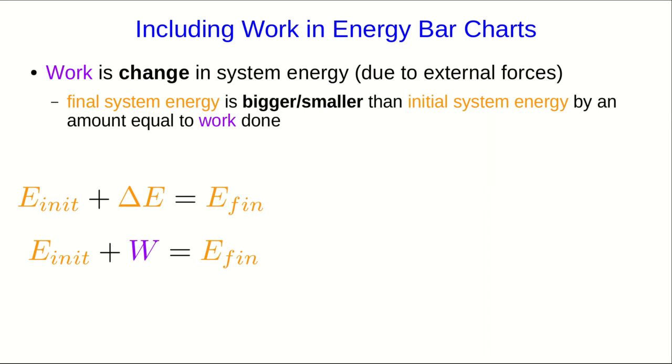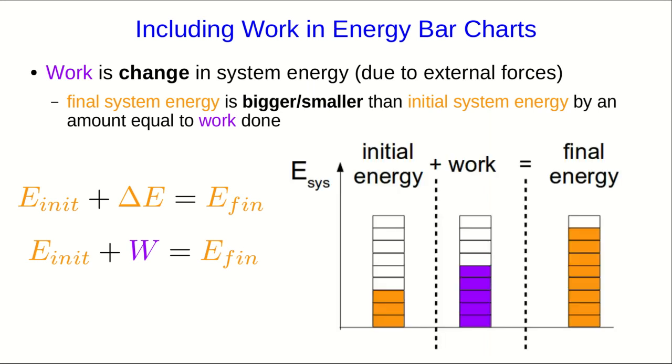The way I'm going to do that is that I'm going to put a section of the bar chart in between the initial energy and the final energy where I will put the work. And when we convert the bar chart into an equation, just remember that the equals sign goes over by one of the two dotted lines, the one that's after the work. The reason I'm organizing the bar chart this way is that I want to stress that the work isn't part of the initial energy or part of the final energy. Remember, it's the change in energy.